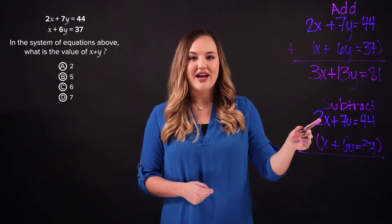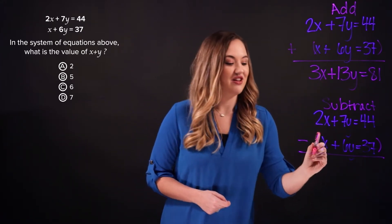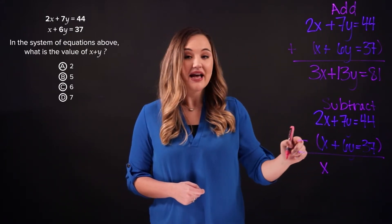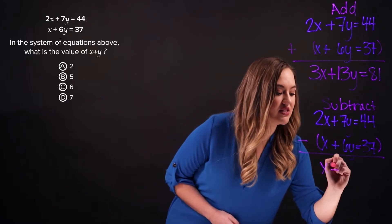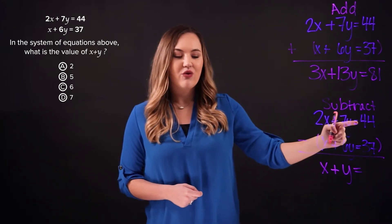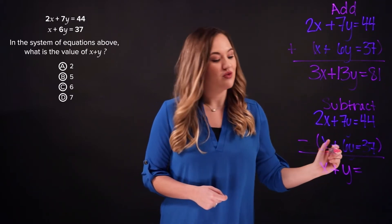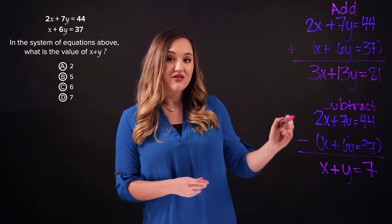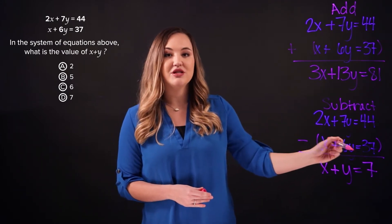So 2x minus x results in x. Then 7y minus 6y results in a positive y, and 44 minus 37 results in 7. So subtracting the two given equations results in x plus y equals 7.